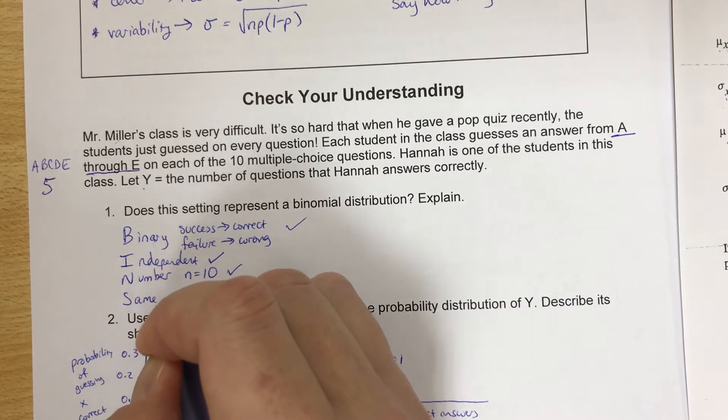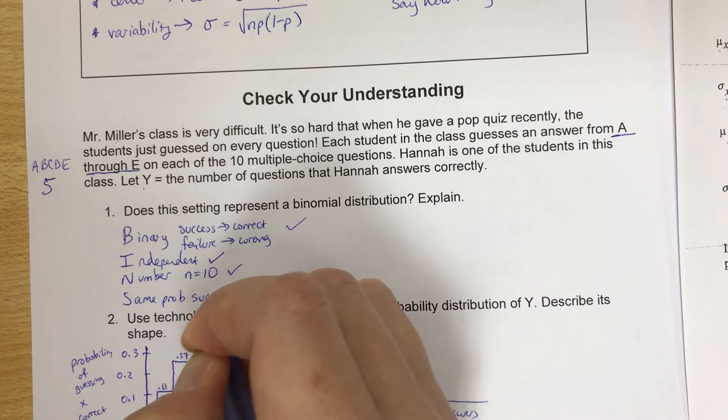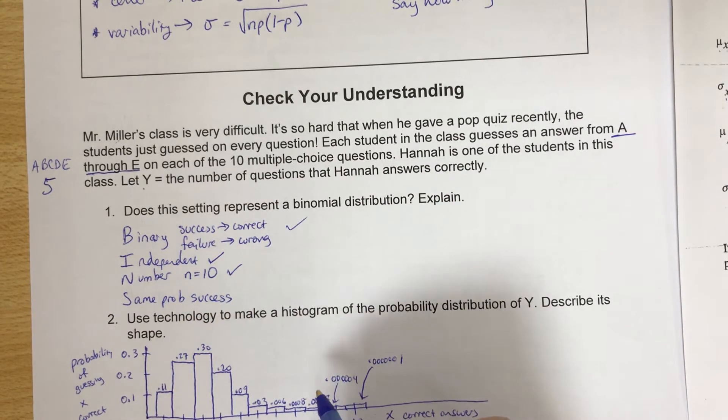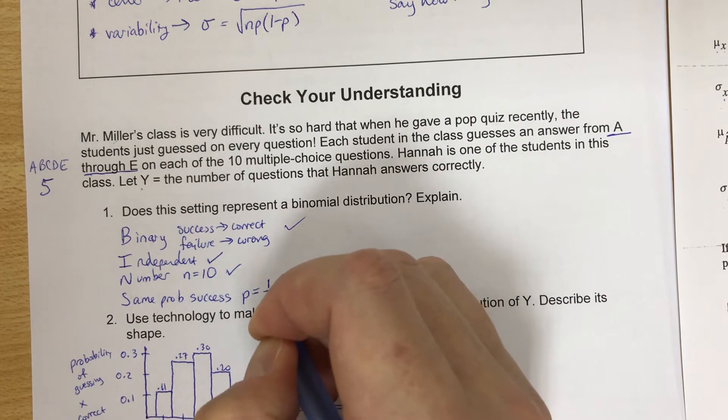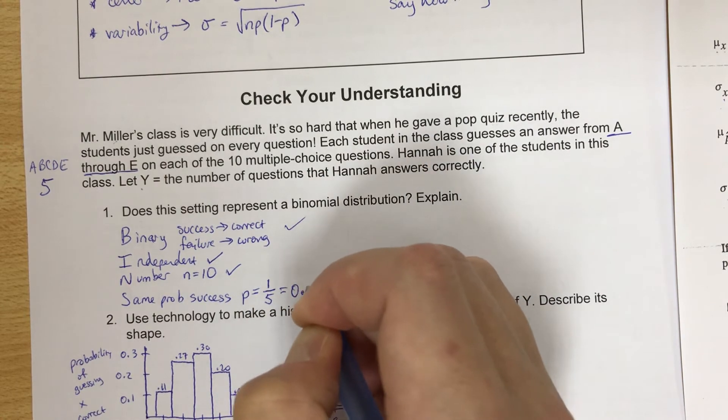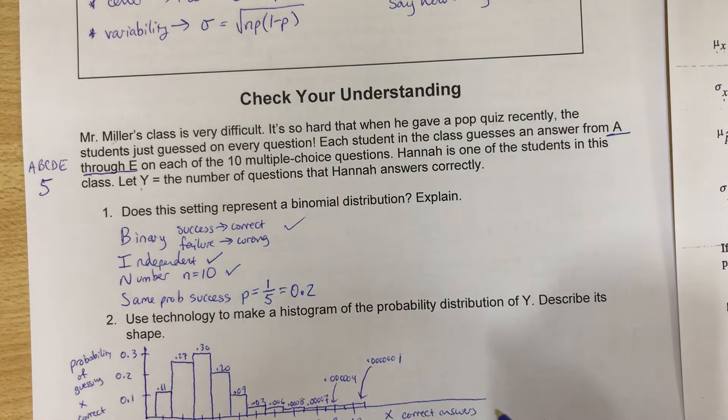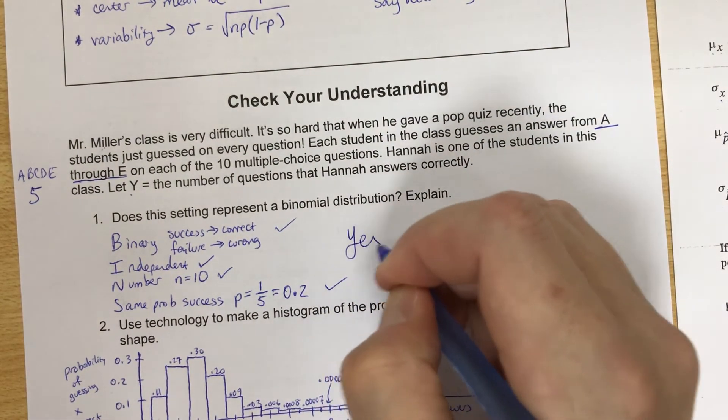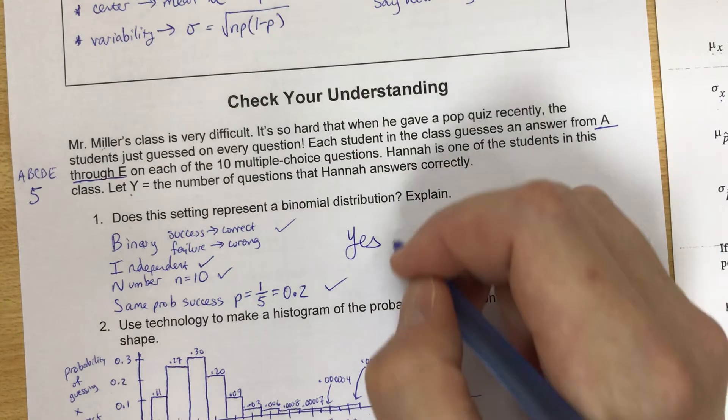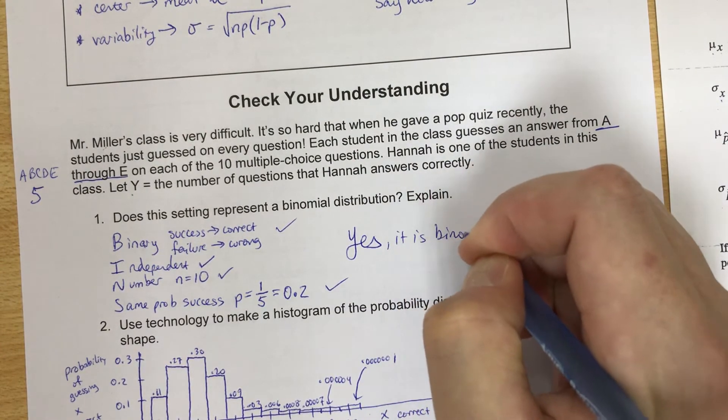Do we get the same probability of success? Well, each question has five choices. The probability that we guess correctly is one out of five, which is 0.2. So yeah, each question will have a probability of 0.2. So yes, this is a binomial distribution. Yes, it is binomial.